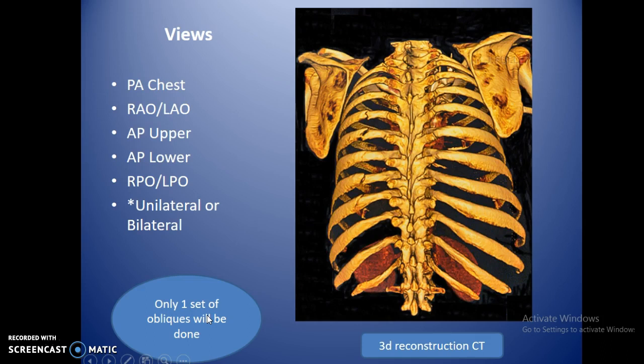Views we're going to cover: PA chest, RAO, LAO, AP upper, AP lower, RPO, and LPO. These can be done unilaterally or bilaterally. Most of the time they're done unilaterally because the patient has pain on one specific side. Only one set of obliques will be done — either RPO/LPO or RAO/LAO.